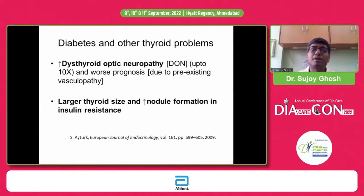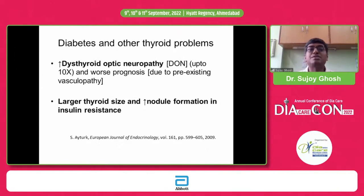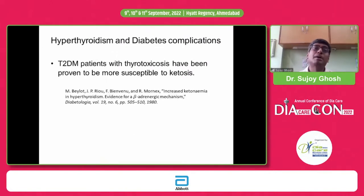A hyperthyroid individual due to Graves' disease might have thyroid-associated neuropathy. If such an individual additionally has diabetes, there is a greater risk of dysthyroid optic neuropathy. The TSH level tends to go up if an individual is hypothyroid, increasing the chances of thyroid nodules. Even in type 2 diabetes, there is a greater risk of ketosis if individuals have thyrotoxicosis.